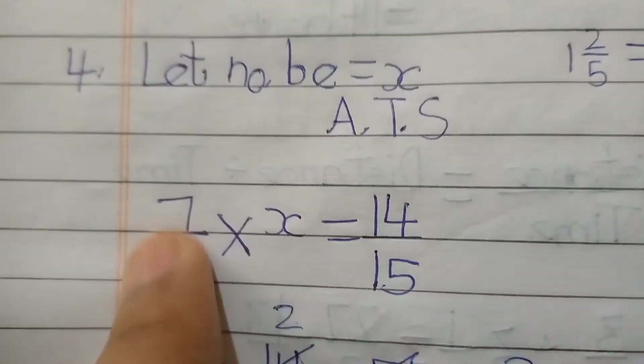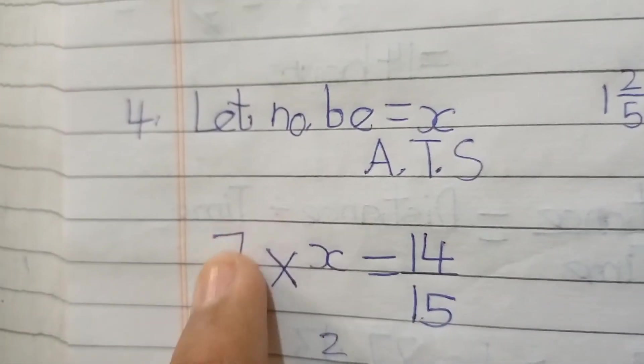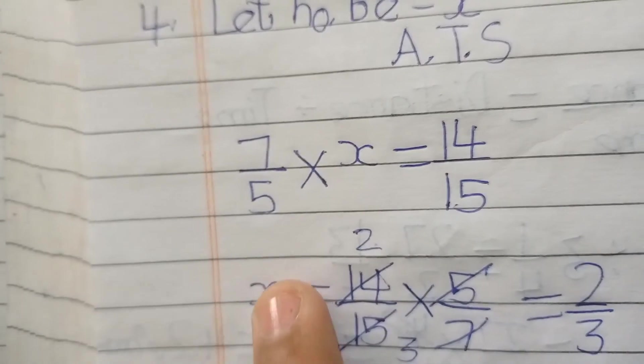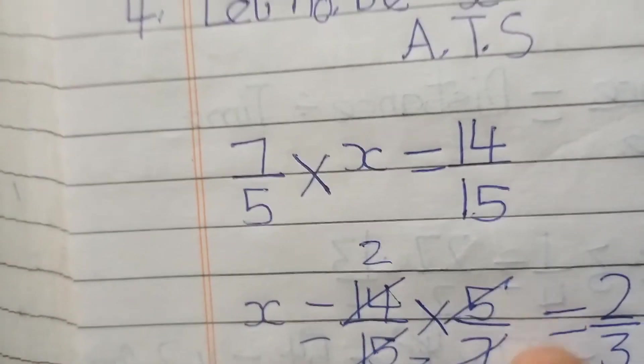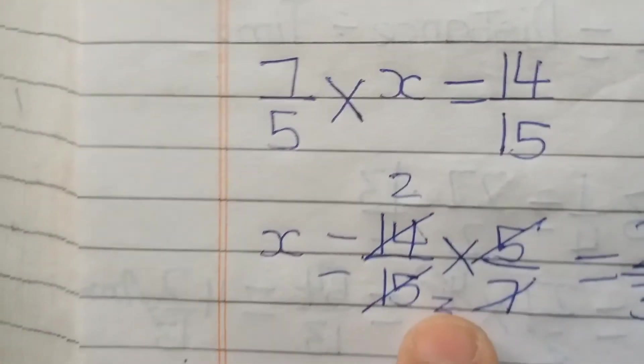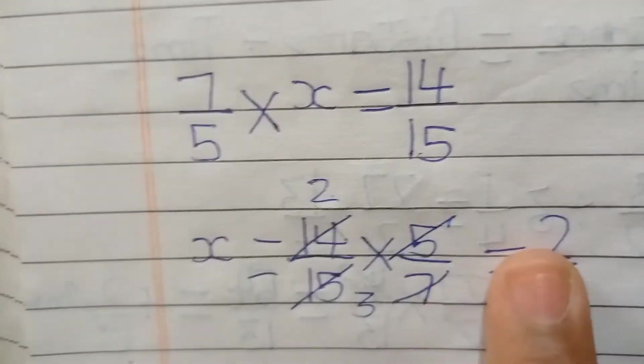So according to statement ho jayega 7 over 5 into X is equal to 14 over 15. 7 over 5 ko jayega reciprocal idhar side par jakar multiply to ho gayi. X is equal to 14 over 15 into 5 over 7 jayega. 7 ko 14 ke saath kat kar dena, 2 aayega. 5 ko 15 ke saath kat kar dena, 3 aayega. So hamara answer aayega 2 over 3.